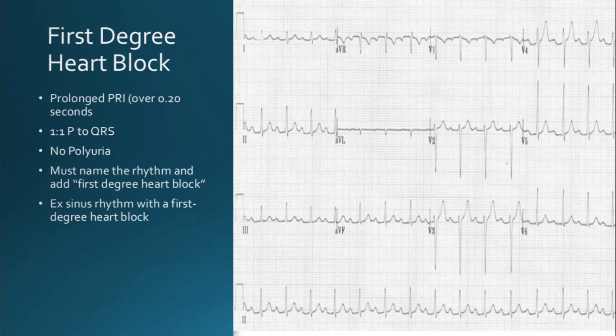First degree AV block is the only heart block where you describe the underlying rhythm before stating the block — for example, 'normal sinus rhythm with a first degree AV block.' The patient is most likely asymptomatic. In younger patients, it may arise from increased vagal tone; in the elderly, it's most likely from fibrotic changes of the cardiac conduction system. MI, coronary heart disease, and inflammation can also cause it. In the example, the PR interval is prolonged, and there is one P wave for every QRS — so no polyuria, meaning no excessive P waves.